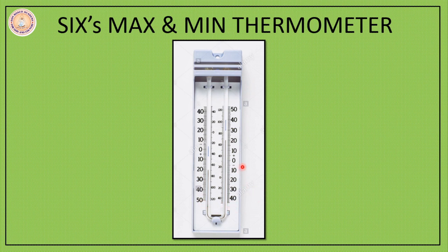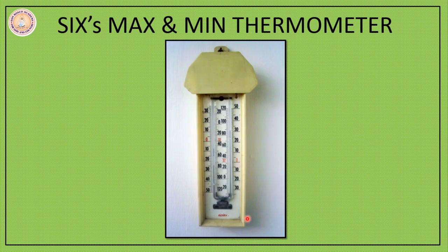So on your screen you can see a Six's maximum and minimum thermometer. It is mounted on a wooden plank. It can also look like this, also mounted on a wooden plank. Now how does this Six's maximum and minimum thermometer work?